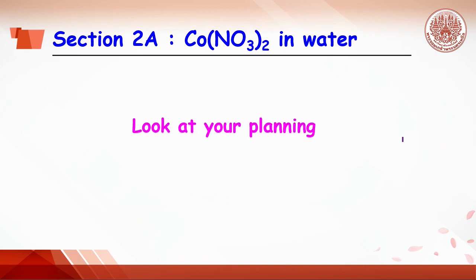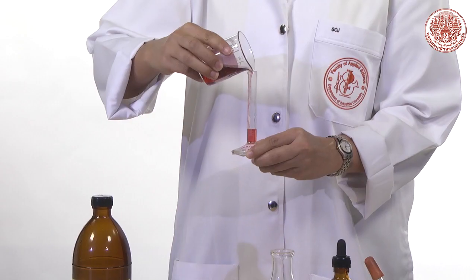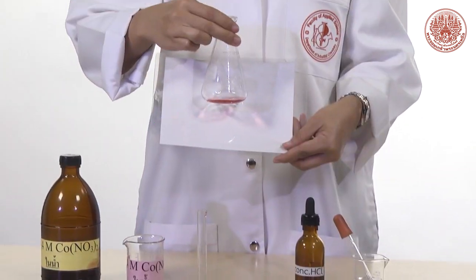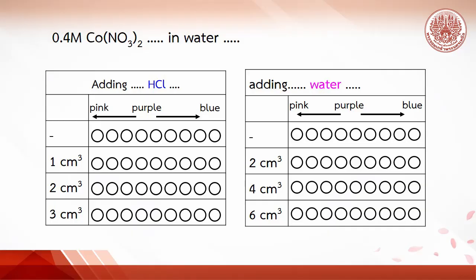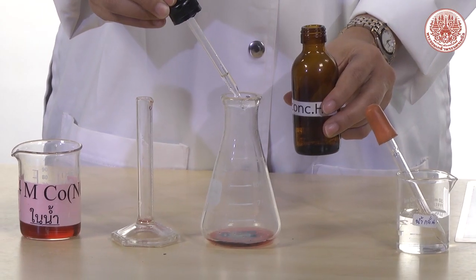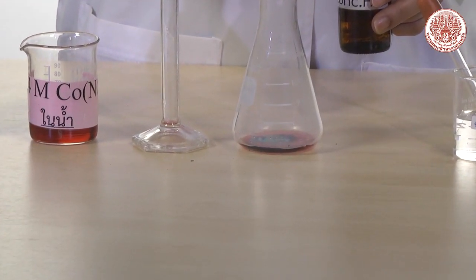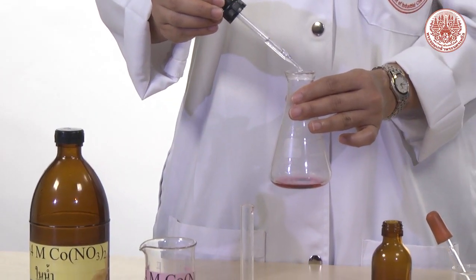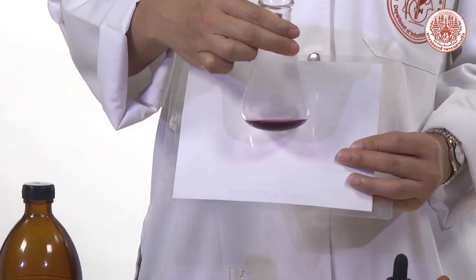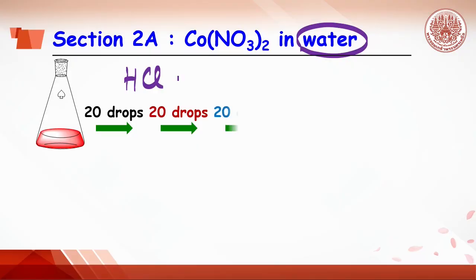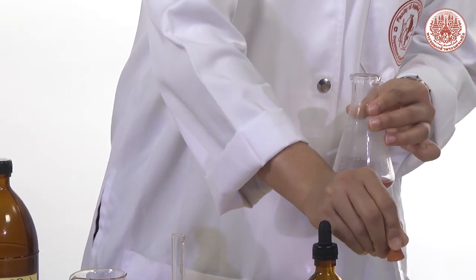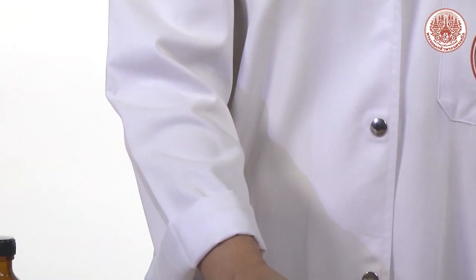On Section 2A, 2.5 mL of cobalt ion in water is dropped in the Erlenmeyer flask. 20 drops of hydrochloric acid is added. Record the solution color, then add another 20 drops and record the color. The hydrochloric acid is added till the solution turns blue. Then take the blue solution and add water, 2 mL each, till pink color appears.